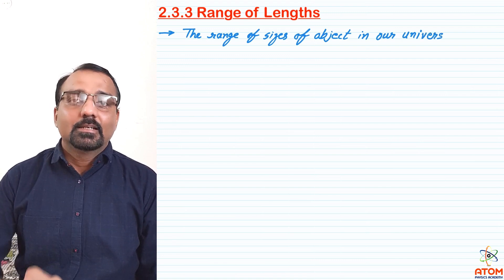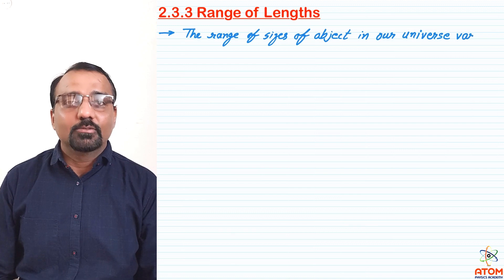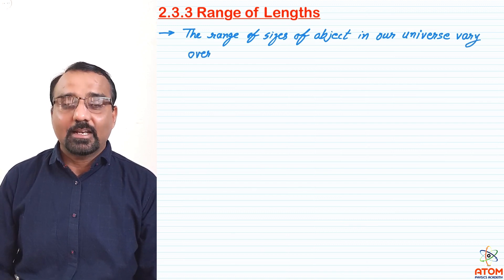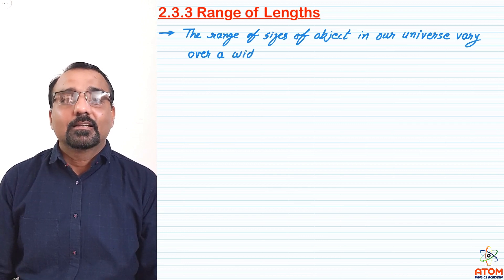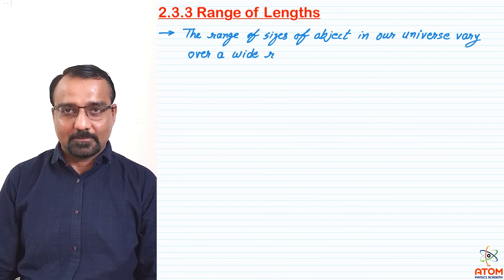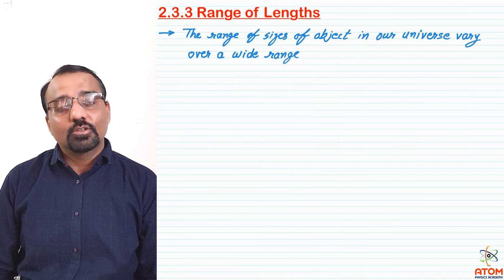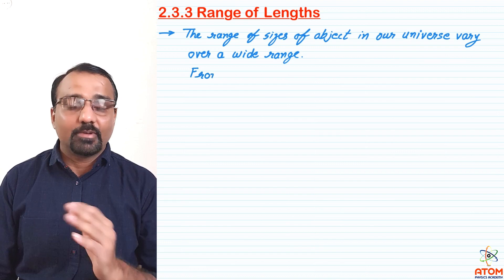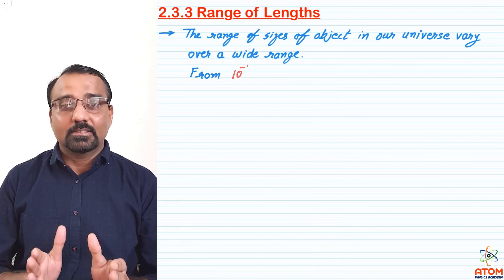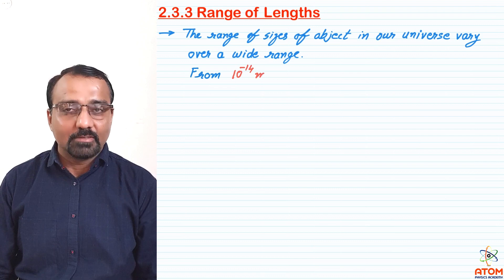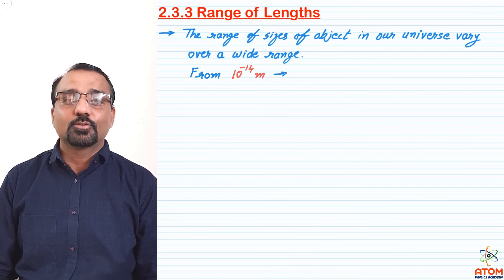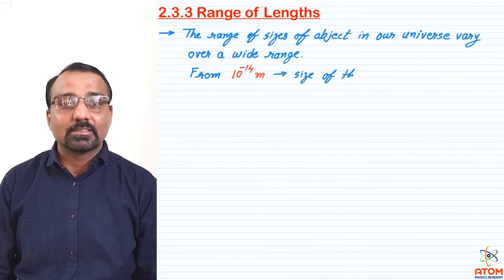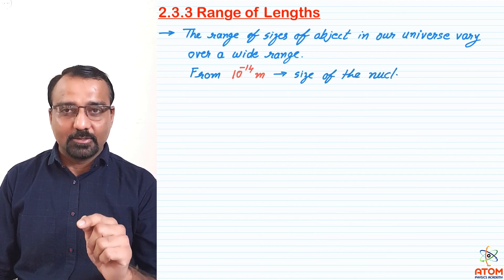It starts from the lowest value like 10 raise to minus 14 meter, which is the size of a nucleus, and goes up to a very large distance — the size of the observable universe — which is 10 raise to plus 26 meter.